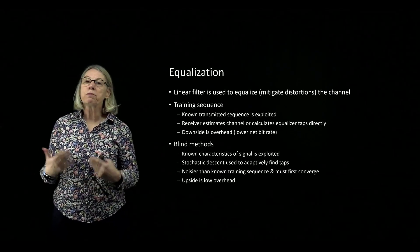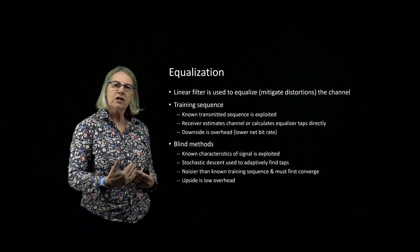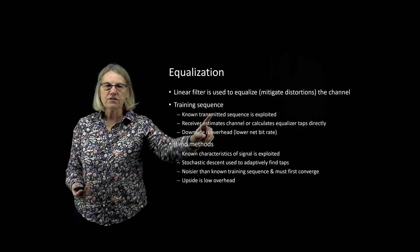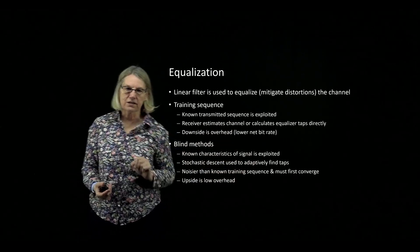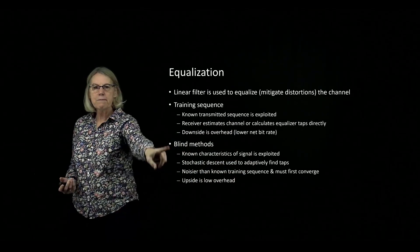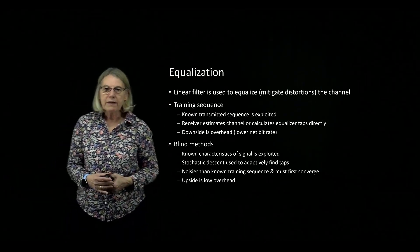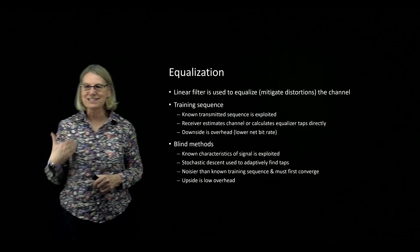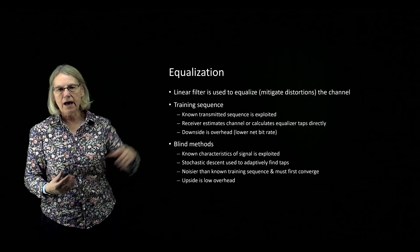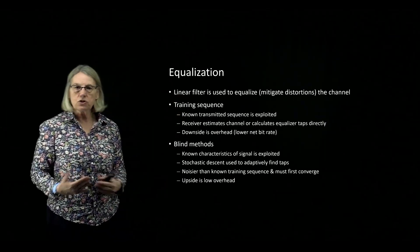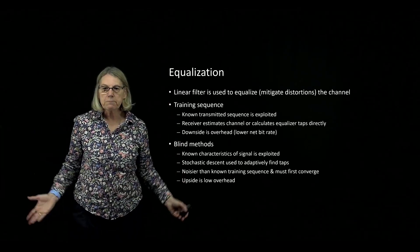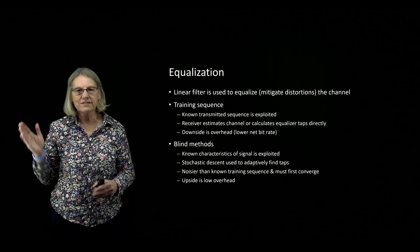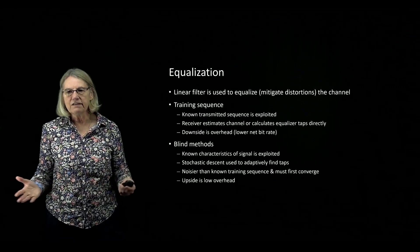There are other solutions known as blind methods. A blind method creates an equalizer even without the side information of a training sequence. Instead of using knowledge of the transmitted sequence, it uses characteristics of the signal that can be exploited — and that's what CMA does. CMA is a blind method for equalization. Blind methods use a stochastic descent that adaptively finds the optimal taps for the linear filter. This is a noisier solution than training sequences, but the upside is very low overhead.